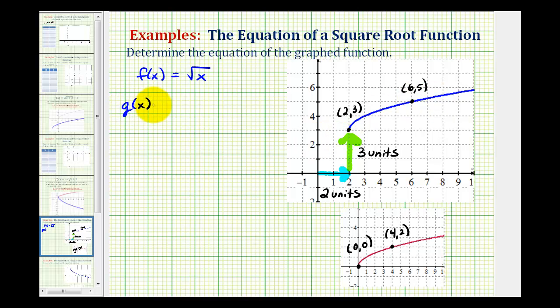g of x is going to be equal to f of, because it's been shifted right two units, it's going to be f of the quantity x minus two. And then because it's been shifted up three units, we'd also have plus three.